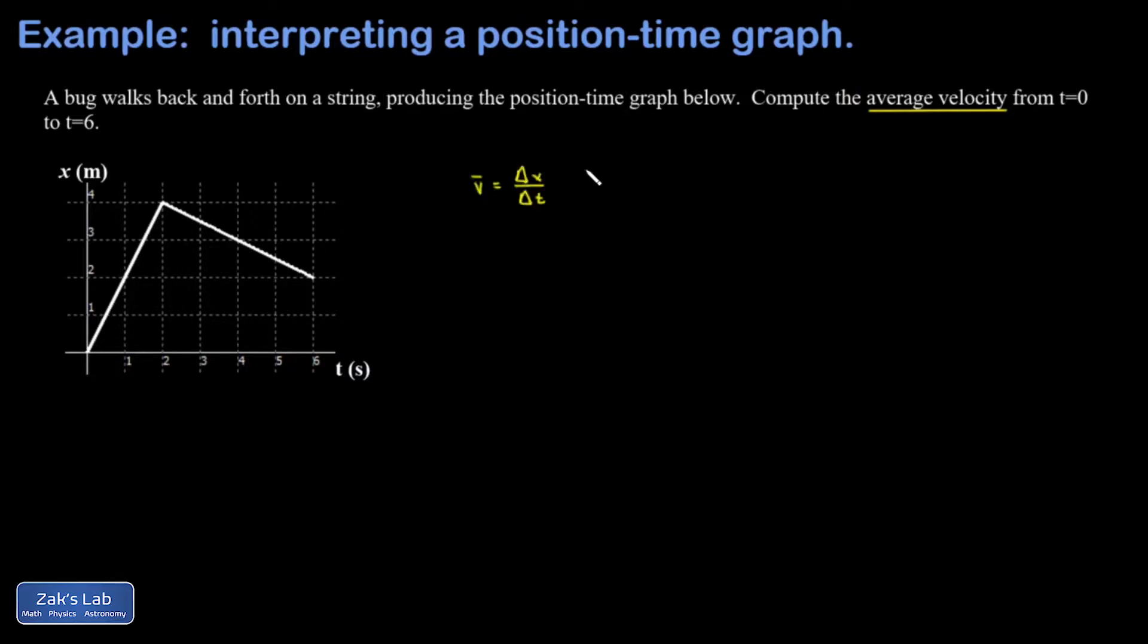So the answer here is really quick. The average velocity is given by the change in position divided by the change in time. And to find the change in position, it doesn't matter at all what's going on between the starting point and the finishing point.